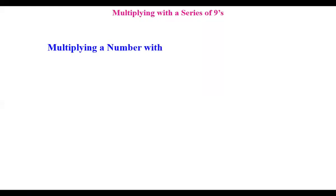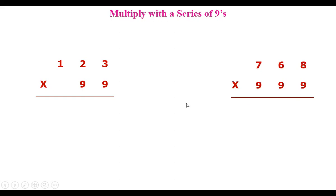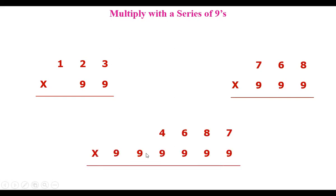Suppose we want to multiply a number with a single nine, double nine, or triple nine — whatever may be the number of nines. We get three cases: when you multiply a number with all nines, the number of nines can be less than, equal to, or more than the number of digits. These three cases we are going to deal with here.